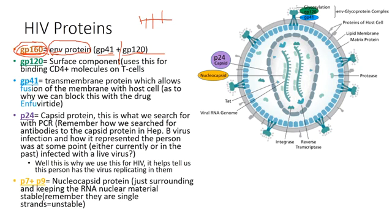GP120 is the surface component of the protein that binds to CD4 molecules on T cells — important for pathogenesis. GP41 is the transmembrane protein that holds GP120 and anchors it into the membrane, but it is also important for fusion of the viral membrane with the host cell membrane. After CD4 binding and co-receptor binding, the membranes come closer together and GP41 causes direct fusion, allowing the virus to enter. We can target GP41 and block membrane fusion with enfuvirtide.